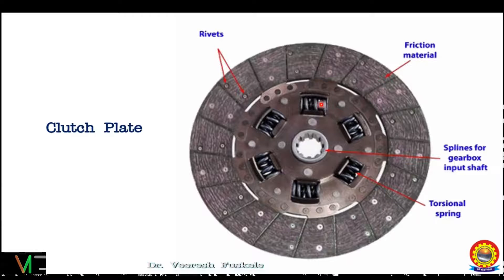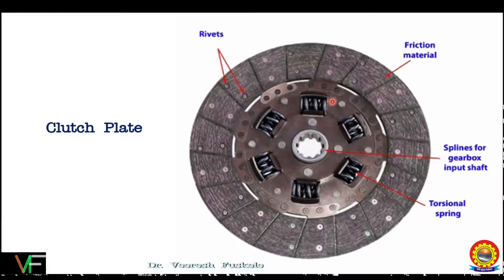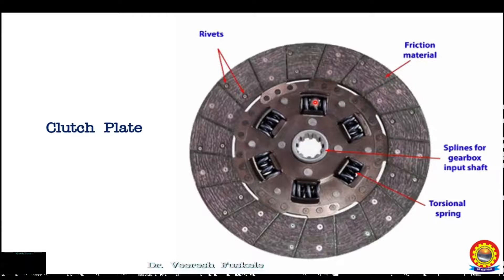When the clutch is immediately engaged, the pressure plate pushes the clutch plate against the flywheel. If the clutch plate is at rest and the flywheel is rotating at some non-zero speed, there is a sudden torque transmitted with a speed differential, which can cause jerking due to sudden pickup. These coil springs reduce the torsional vibrations that result from the sudden engagement between the clutch plate and the flywheel.